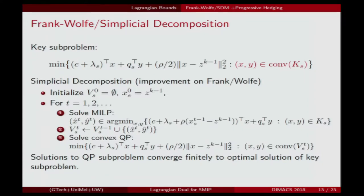We use simplicial decomposition — an improvement on Frank-Wolf — to solve this key subproblem. We initialize with a set of points that form a subset of the extreme points of the convex hull, and it's convenient to initialize with the previous average point from progressive hedging. To solve this by the simplicial decomposition algorithm — within a sub-step of progressive hedging — we alternate between solving a mixed integer linear program with the quadratic objective linearized at the current iterate x^{t-1}, and solving a convex continuous quadratic program over the convex hull of the accumulated solution set.